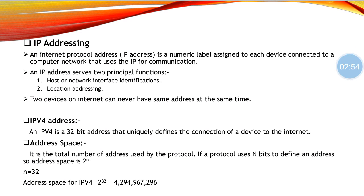Coming to IP addressing — it is a numerical label assigned to each device connected to a computer network that uses IP for communication. It must be a unique address; no two devices connected to the same network should have the same address. An IP address serves two functions: it provides a host ID and a network ID. For example, in a lab if there are 20 PCs connected to a LAN, then PC1 is host 1, PC2 is host 2, and the whole LAN network comes under network ID.